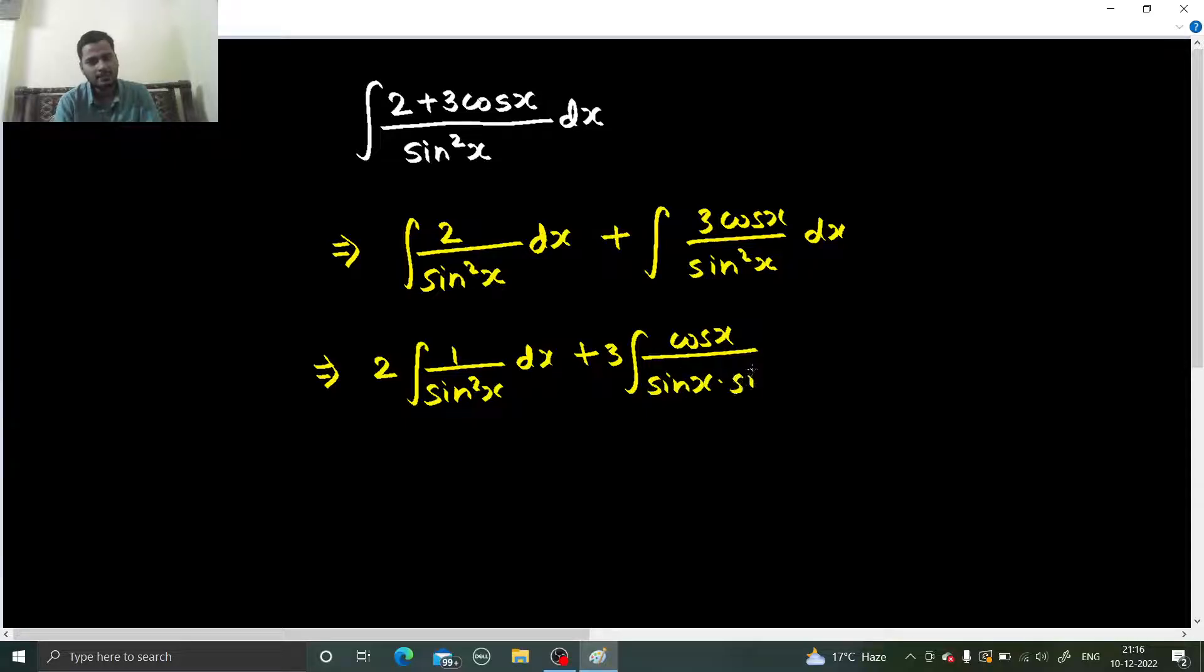multiplied by sine x and dx. So one cos by sine will make cot, because you know cot x is cos x divided by sine x. And you are then left with one - this is cos x by sine x into one by sine x. So one by sine x you all know is cosecant x.